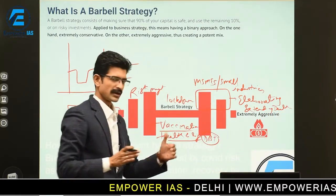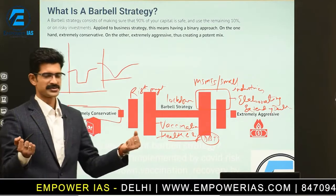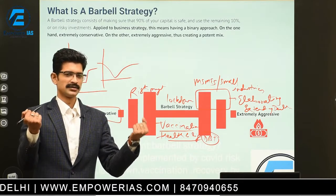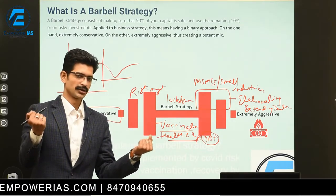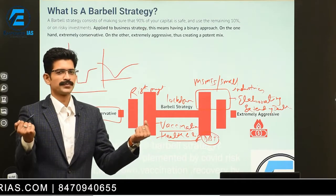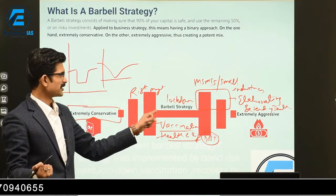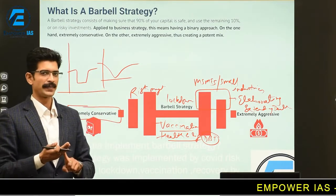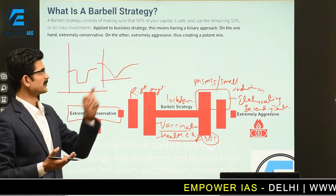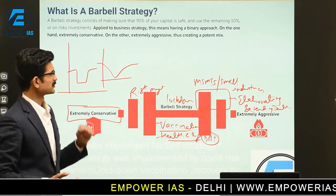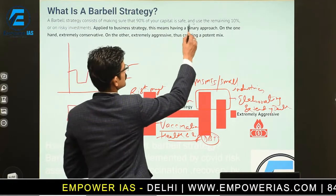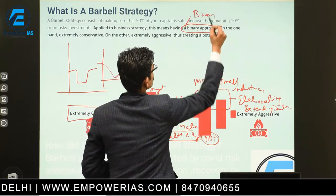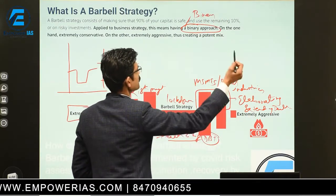The government tried to make it a balanced approach. Just as when you pull out a barbell — ek side mein agar thoda zyada vajan aata hai toh jhukte jaata hai — but you try to manage it in a balanced position. In the same manner, the barbell strategy was adopted by the Government of India, so that 90 percent of capital was safe and the remaining 10 percent was kept at risk. It is called a binary approach due to management of risk as well as development of economy.